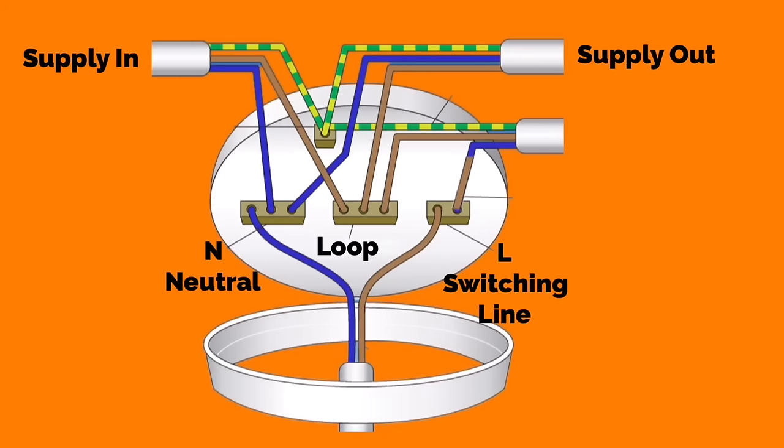If the supply comes in on the left hand side, it will bring in a permanent neutral connection, which is terminated within the neutral block. It will bring in a permanently connected line conductor, which is connected into the loop terminal in the centre, and bring in a circuit protective conductor terminated into the earth connection within the ceiling rose itself.